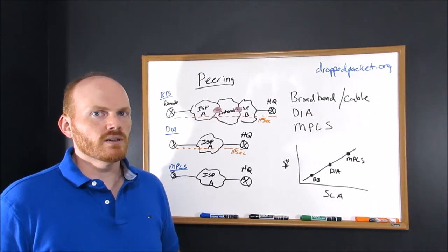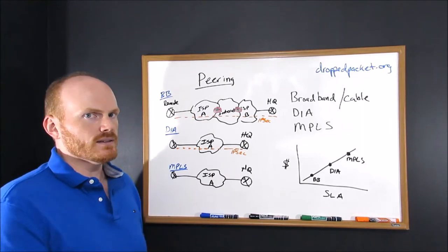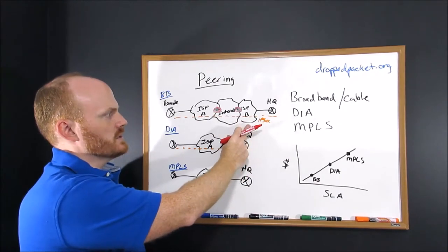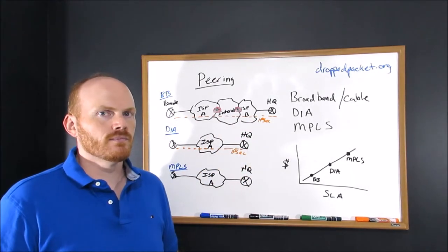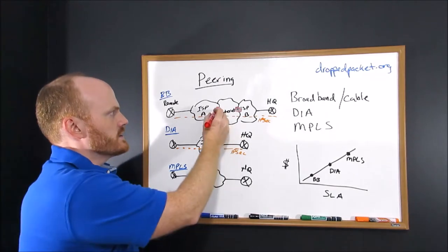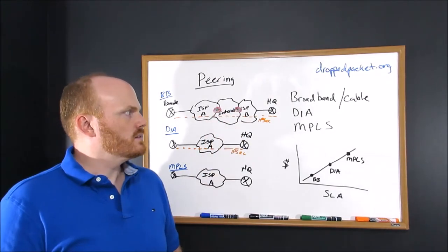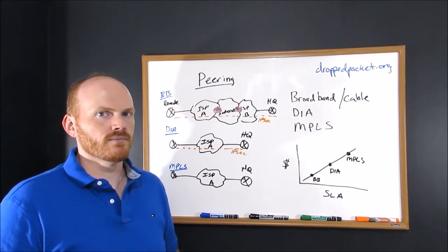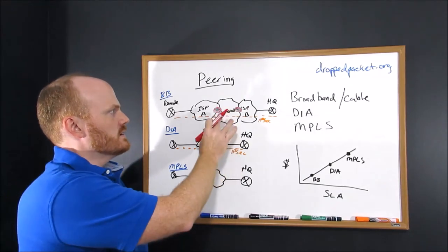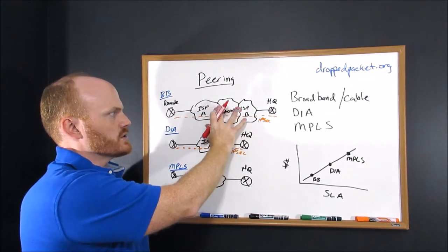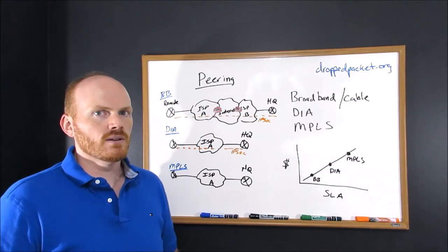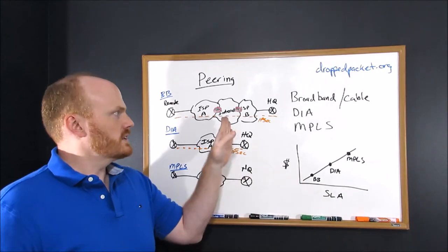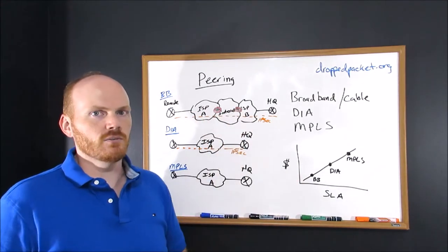Another thing you want to keep in mind is peering, or how packets are going to get from end to end. In this top example, you have a remote site on one ISP, the headquarters on a different ISP, and you're running IPSec between them. If there's any kind of congestion between these ISPs, you might experience packet loss, delay, or jitter on your IPSec service. The problem becomes you won't have any visibility or control over these peering points. And because broadband comes with little to no performance SLA, you won't really have any recourse to get any one of these ISPs to help you troubleshoot that.